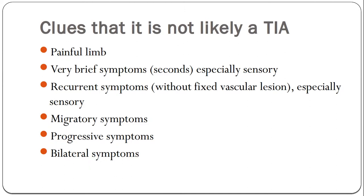Non-focal symptoms are not likely to be TIAs. Associated symptoms like shortness of breath and leg pain are probably not TIAs. Symptoms that move around, things that are bilateral, or things that are very brief lasting only seconds are very unlikely to be TIAs. Positive symptoms such as shaking or visual flashing lights are also unlikely to be TIAs. A gradual onset or march of symptoms are also very unlikely to be TIAs.